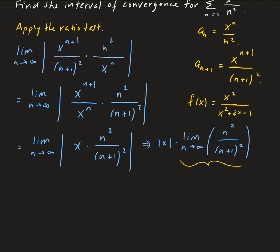So this limit approaches 1, because we have a horizontal asymptote at y equals 1. That means as n approaches infinity this expression goes to 1. So we need the absolute value of x to be strictly less than 1 for convergence, which implies x is between negative 1 and 1.